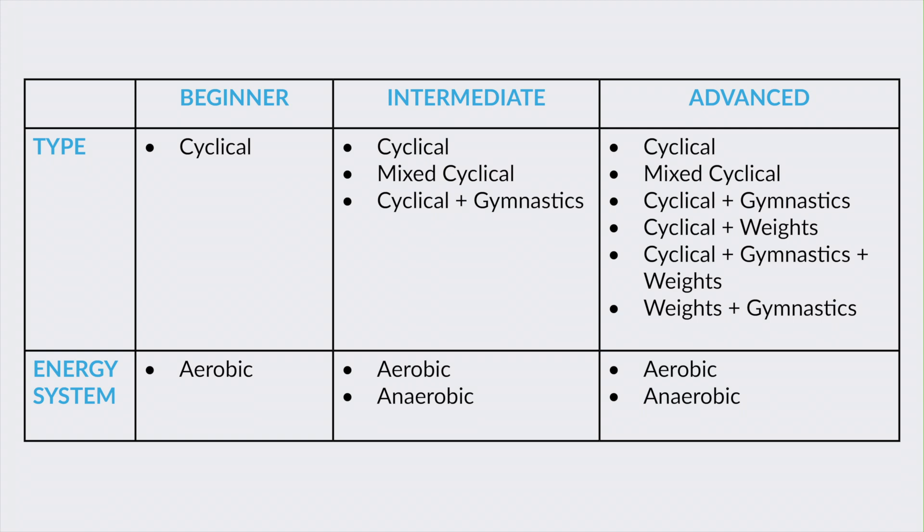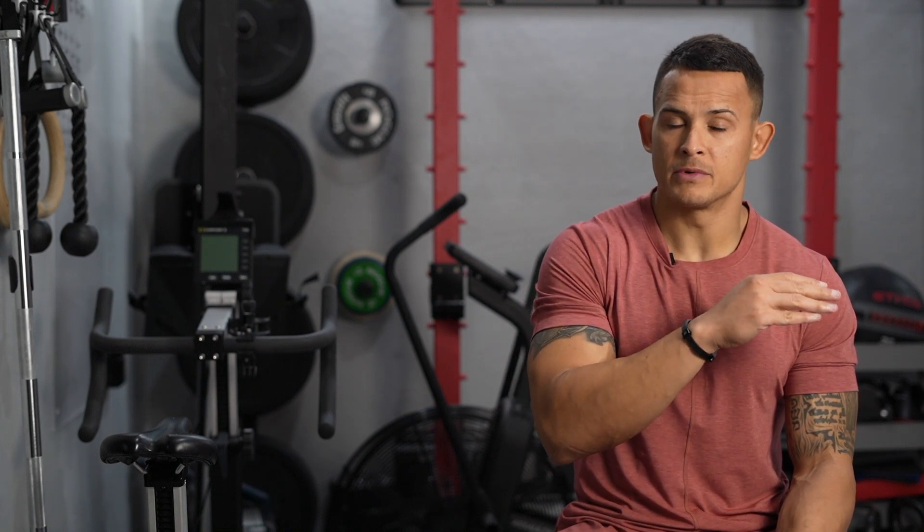Let's talk about the FMEs that your clients will get based on where they sit on that continuum. First, the beginner: the beginner is going to get cyclical-only FMEs. The energy systems they're going to train or test are going to be aerobic only. So with the beginner it's very simple — cyclical only FMEs, aerobic only. No anaerobic work for beginners.